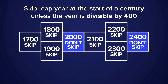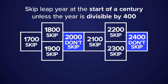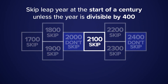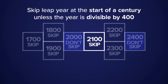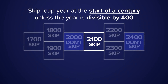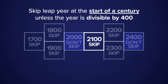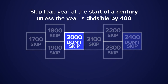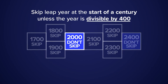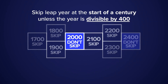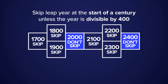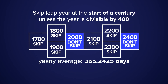For example, every four years we acknowledge the extra day in February, but in the year 2100 we'll skip that leap year since it falls on the start of a century and it's not divisible by 400. Back in the year 2000, it was a leap year, but since it was divisible by 400, we didn't skip it.